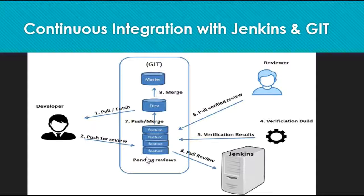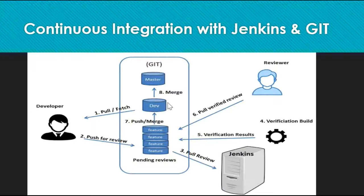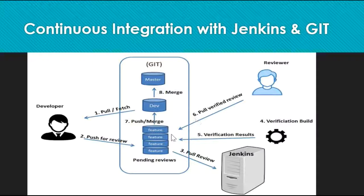Why do we need to create a new feature branch? For example, think about there being another developer in the team who has to make some changes in the application with respect to other requirements. They also pull the source code from the development branch, start making their changes, and push back the changes to the Git repository. They push via a separate feature branch. All features are pushed to the Git repository in separate branches and will be merged into the development branch.